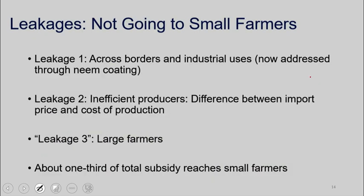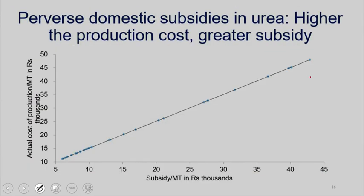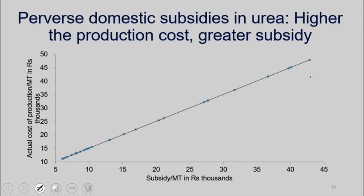Now comes, for me, the most ingenious thing that we do. At the moment there are 30 producers of urea, and there are going to be 37. Each company will get a subsidy based on what it says is its cost of production. If a company says its cost is 10, it gets one subsidy. If it says it's 20, it gets more. So the more inefficient you are, the more the subsidy that you get in the case of urea. Why we continue doing this is something that simply beats me.